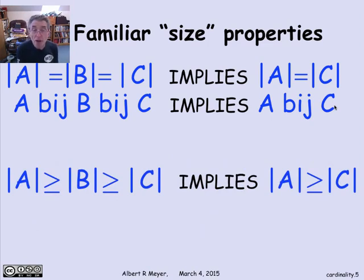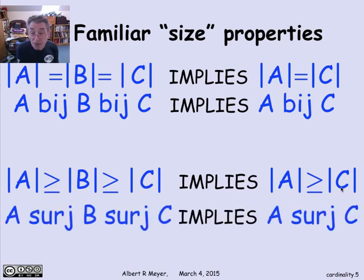The similar property applies to at least as big as, greater than or equal to. For finite sets, if A is greater than or equal to B and B is greater than or equal to C in size, then A is greater than or equal to C. And actually, the same argument that worked for bijection works for surge, because the composition of surjection of surjective functions is a surjective function. So if A surge B and B surge C implies A surge C.